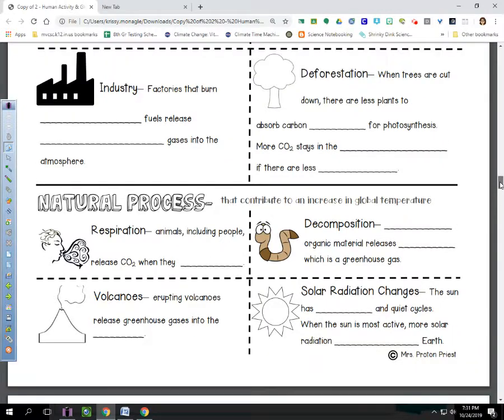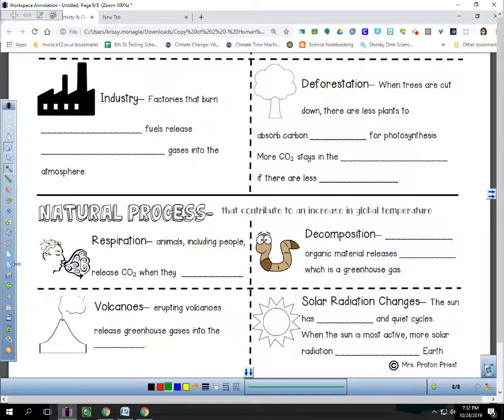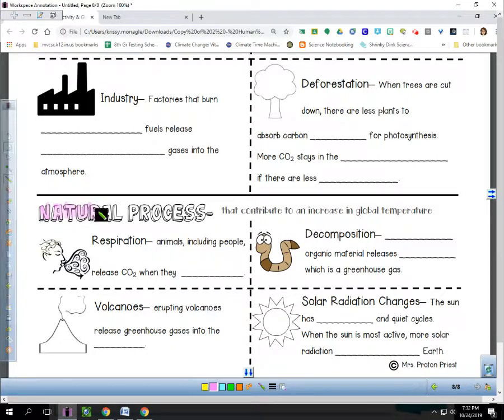And then, the last part of it here, natural processes. We're not doing the greenhouse effect, so we can stop there. There are actually natural things that happen that contribute to the global temperature rising. We talked about how the greenhouse effect is a natural thing, so it makes sense that there are natural processes that are contributing to all of this.